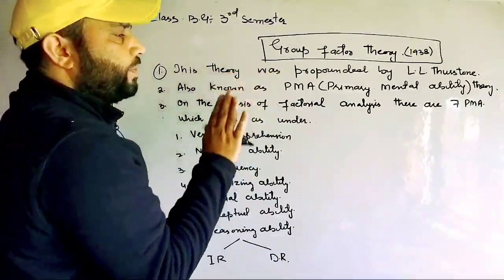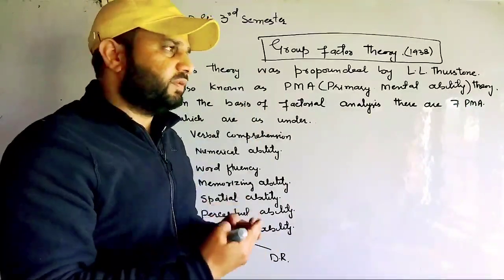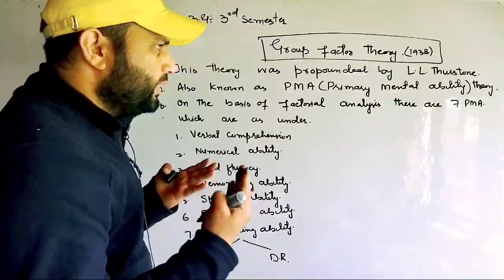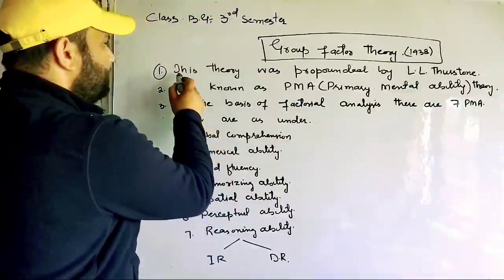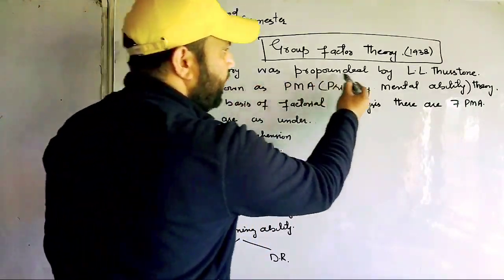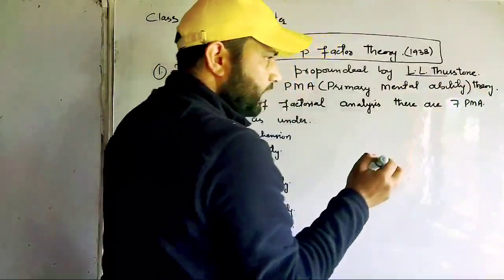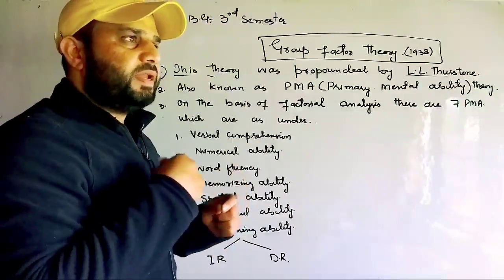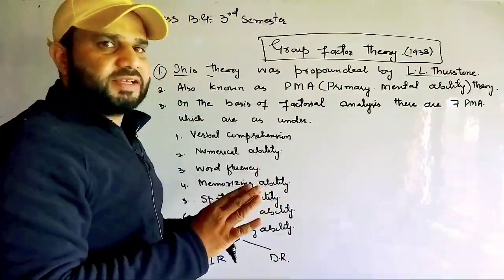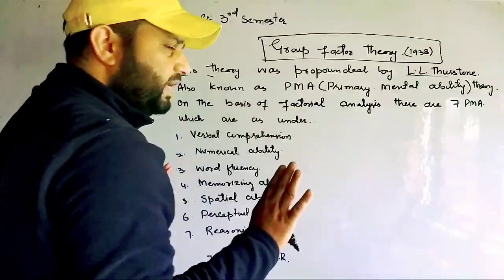Number one: This theory was propounded by — you can write 'given by' or 'formulated by,' whichever feels easy. I have written here: This theory was propounded by L.L. Thurstone. This L.L. Thurstone is an American-born psychologist — you can add that too. So that's the first point clear.